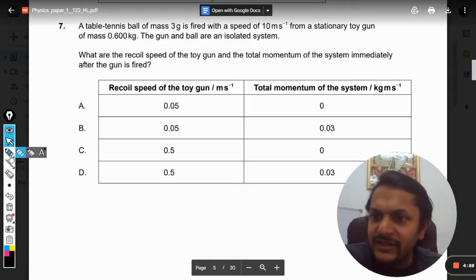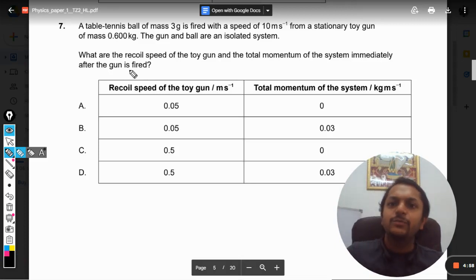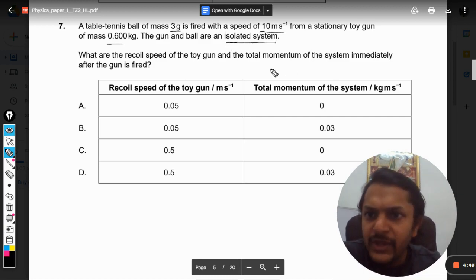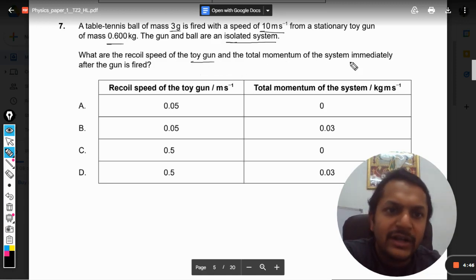Okay, so what is there in this question? A table tennis ball of mass 3 grams is fired with a speed of 10 meters per second from a stationary toy gun of mass 0.6 kg. The gun and the ball are an isolated system. What are the recoil speed of the toy gun and the total momentum of the system immediately after the gun is fired?